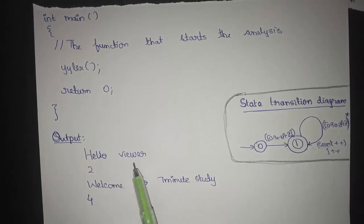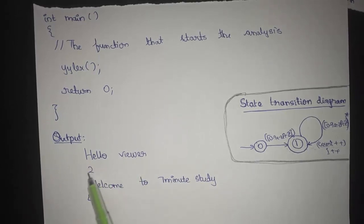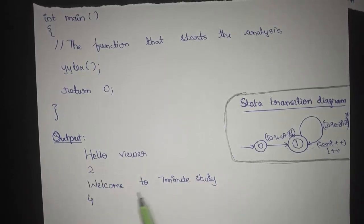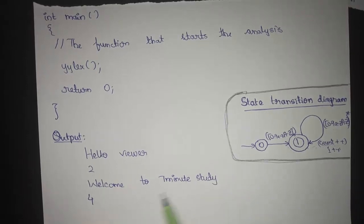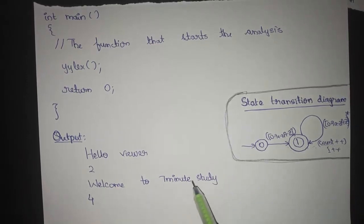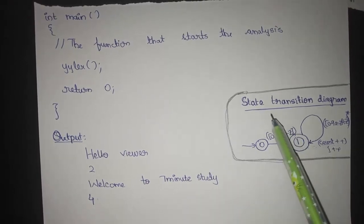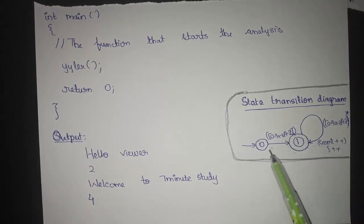The output will be like this. Whenever we give input as hello viewer, or two words, it would print the number of words. Whenever we give hello welcome to seven minute study, that is four words, welcome to seven minute and study, we get four as four words are present here.